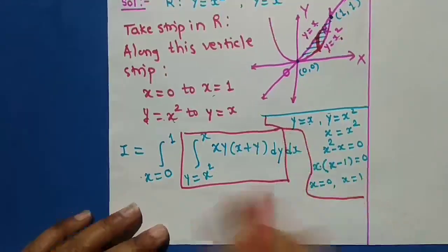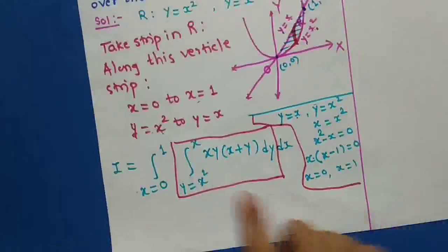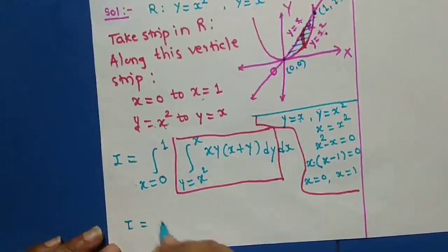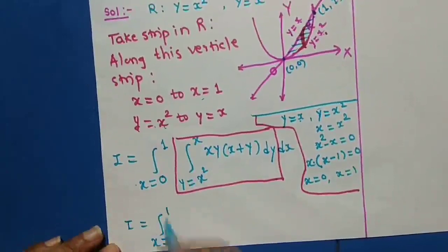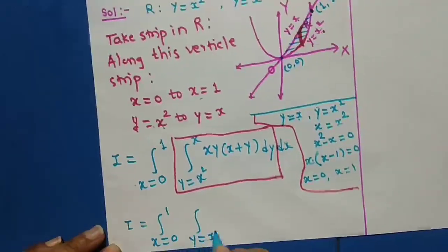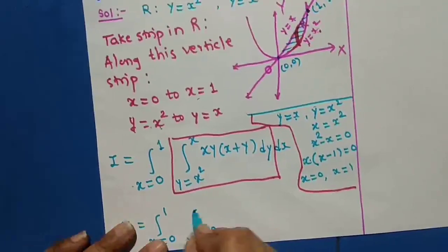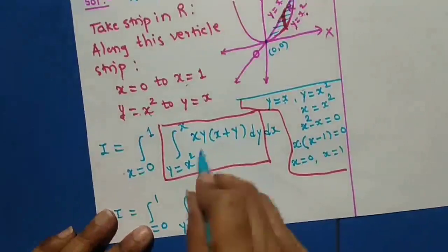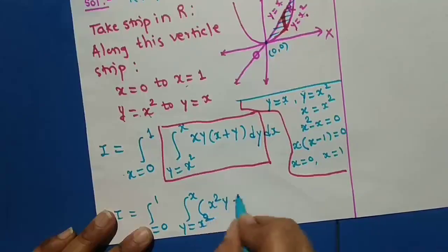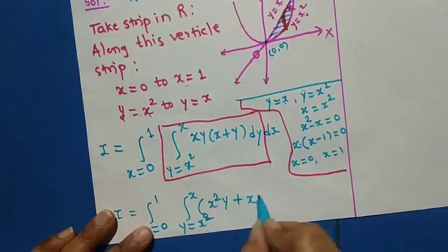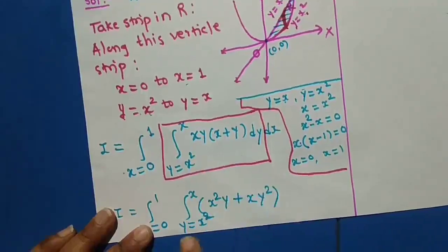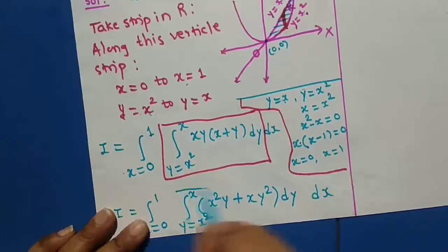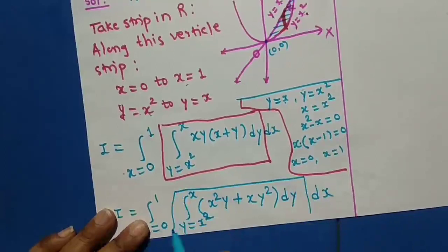We evaluate the inner integration with respect to y. First, we multiply out the bracket: xy(x + y) = x²y + xy². So I equals the integral from 0 to 1 with respect to x, and the inner integral from x² to x of (x²y + xy²) dy dx.